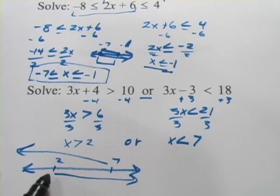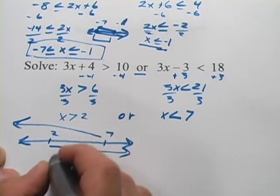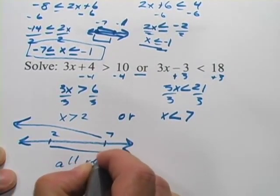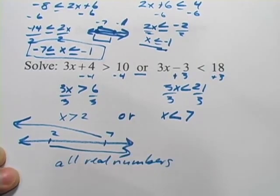Well it covers everything. It goes up all the way up to infinity, it goes all the way down to negative infinity. So your answer for this one is going to be something like all real numbers. So that's a little bit of work with compound inequalities.